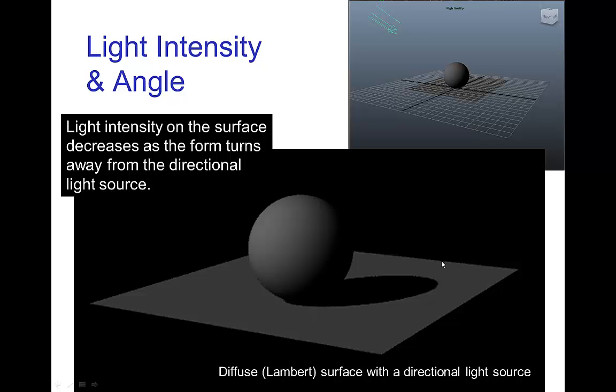Here's an example of a directional light source shining on a diffuse sphere and a diffuse floor. On the sphere, we see that the part of the sphere that is facing the light source is brightest.